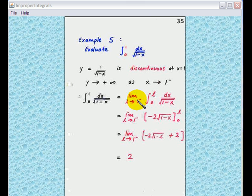So in this case, after you integrate 1 over square root of 1 minus x, you get minus 2 square root of 1 minus x with limits from 0 to L. So substituting the limits, you get minus 2 square root of 1 minus L plus 2.